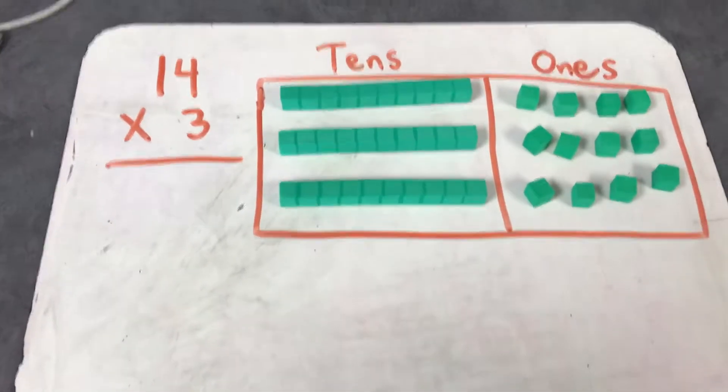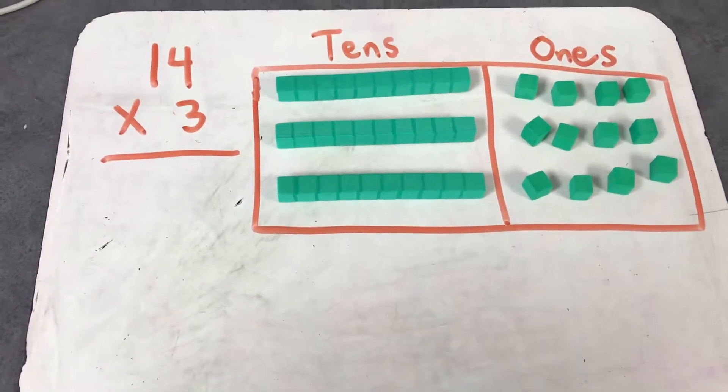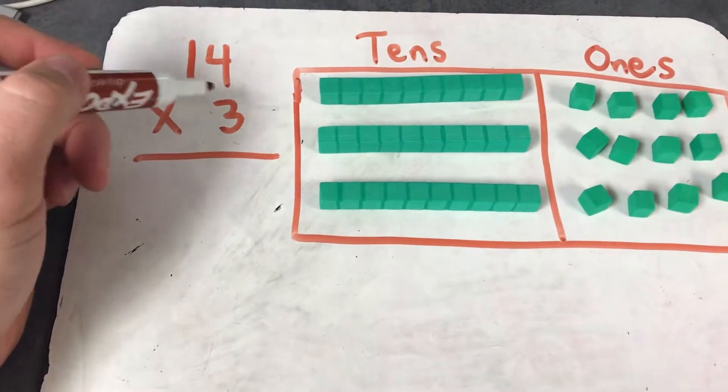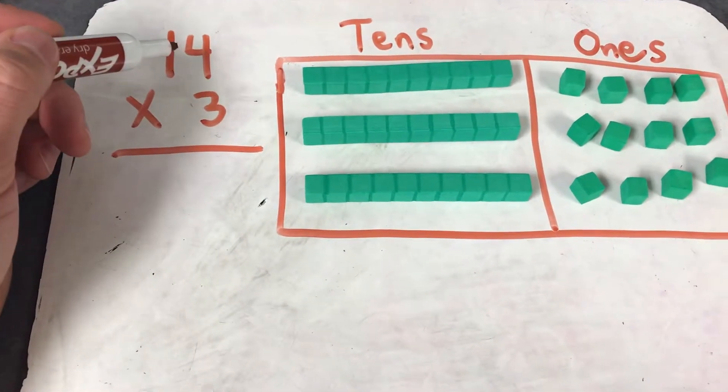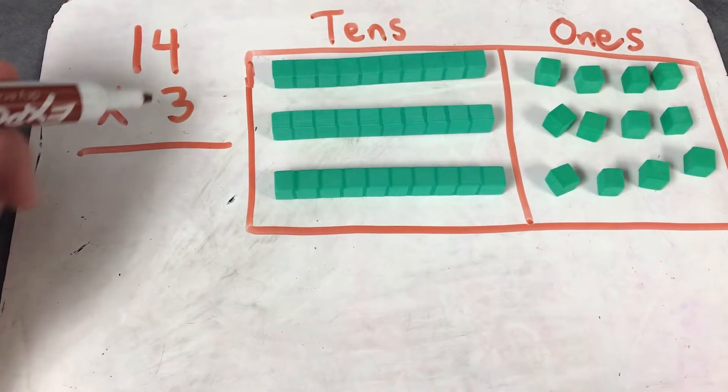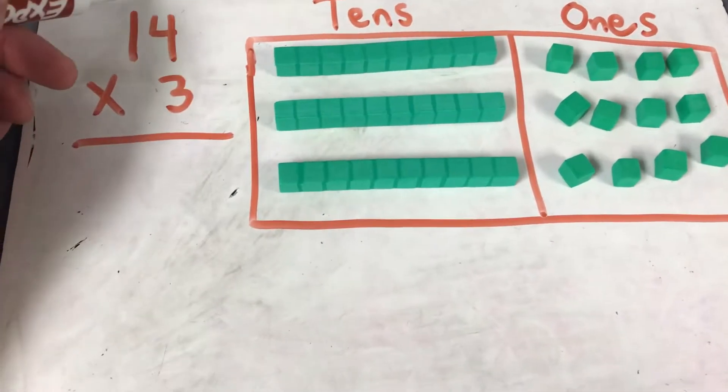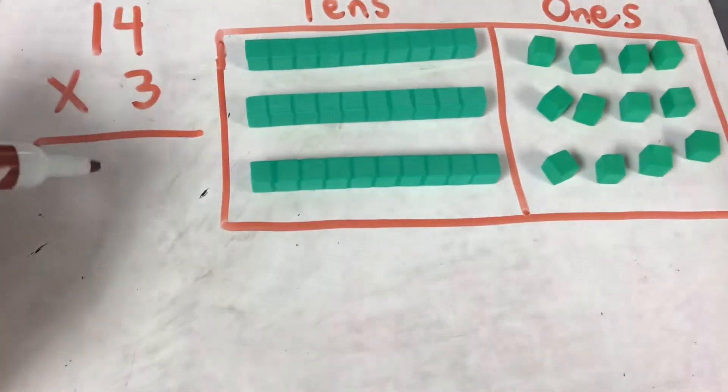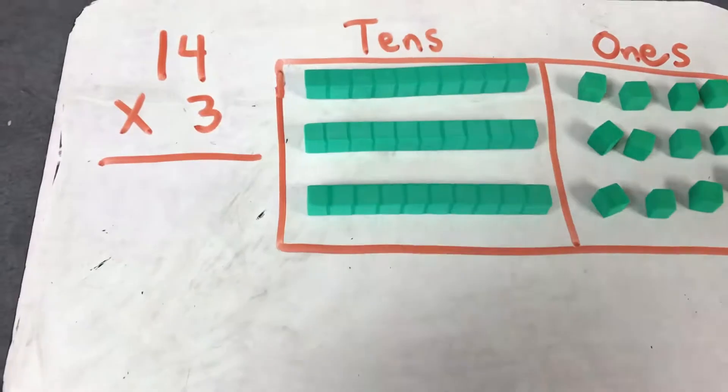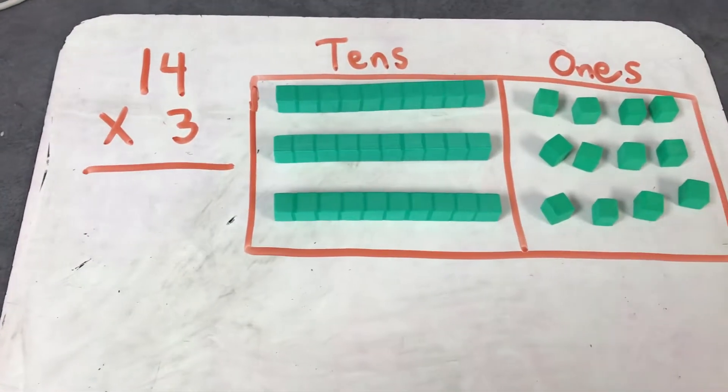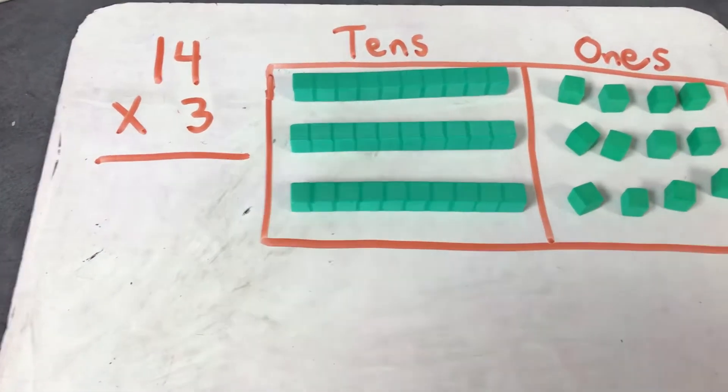This is part of the common core, but more importantly this is just conceptually understanding what we're doing. Instead of just hitting up the step-by-step paper and pencil method—four times three is two, put the one up here, three times one plus one is four—instead of doing that, I want to take just a day to make sure the kids are really knowing what they're doing and why.